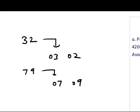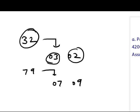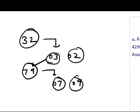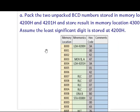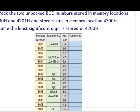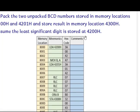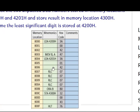In our problem, we are given digits stored in memory locations that we need to convert. We have to pack them — so this is the packed notation and this is the unpacked notation. The program is written here, and it is given that the least significant digit is in memory location 4200h.